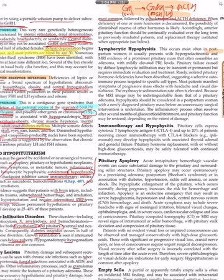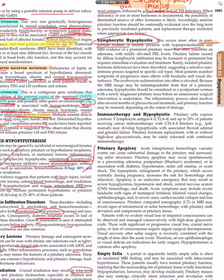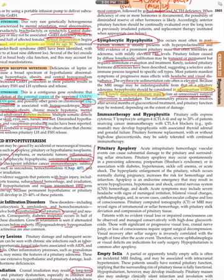Lymphocytic hypophysitis occurs, this often occurs in postpartum women. Mark this: lymphocytic hypophysitis in postpartum women presenting with hyperprolactinemia and MRI suggestive of pituitary mass that resembles adenoma with mildly elevated prolactin level. Pituitary failure caused by diffuse lymphocytic infiltration may be transient or permanent and requires immediate evaluation and treatment. Most patients manifest symptoms of progressive mass effects with headache and visual disturbance. ESR will be elevated because of course this is an inflammatory condition. The MRI may be indistinguishable from that of a primary adenoma. Hypophysitis should be considered in a postpartum woman with newly diagnosed pituitary mass before any unnecessary surgical intervention is taken. So just highlight this: postpartum woman with a newly diagnosed pituitary mass, think of hypophysitis first, lymphocytic hypophysitis.